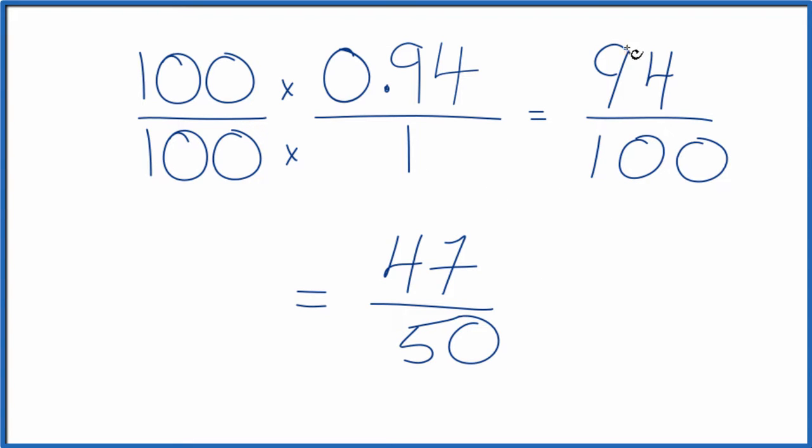So we've simplified the fraction 94 over 100 down to 47 over 50, and all of these are equal. If you divide 47 by 50 or 94 by 100, you get 0.94. This is Dr. B, and thanks for watching.